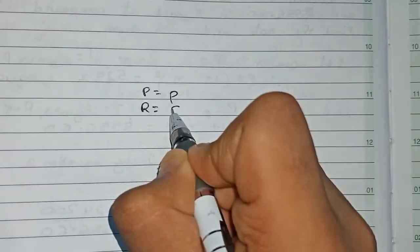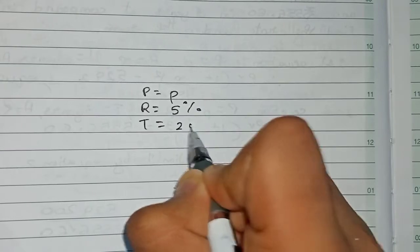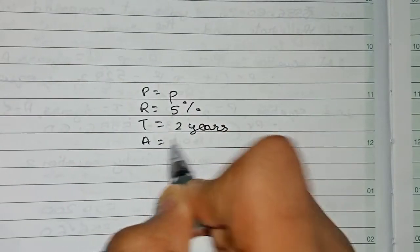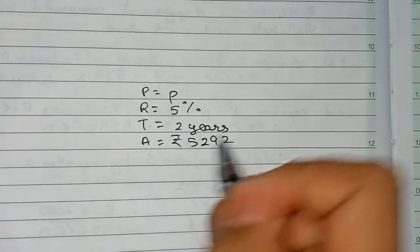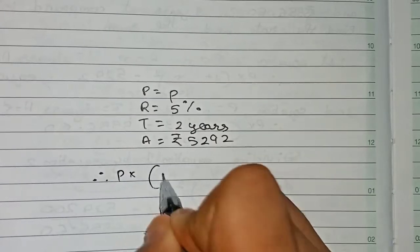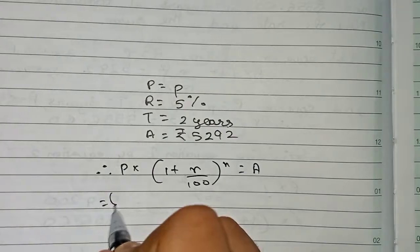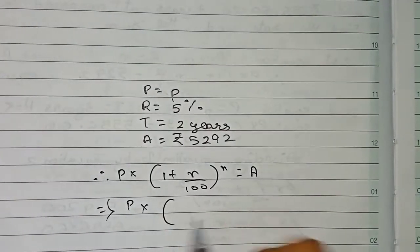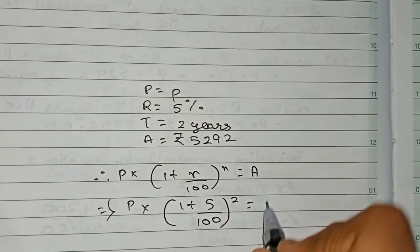Now find the principal. Write: principal is equal to P, rate of interest is 5%, time — we take the first formula — is 2 years, and for those two years the amount is Rs 5,292. So the formula becomes: P into (1 + R/100) to the power n equals the amount. Put in the values: P into (1 + 5/100) to the power 2 equals 5,292.